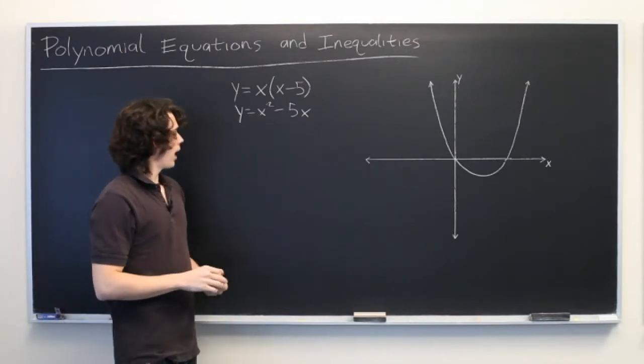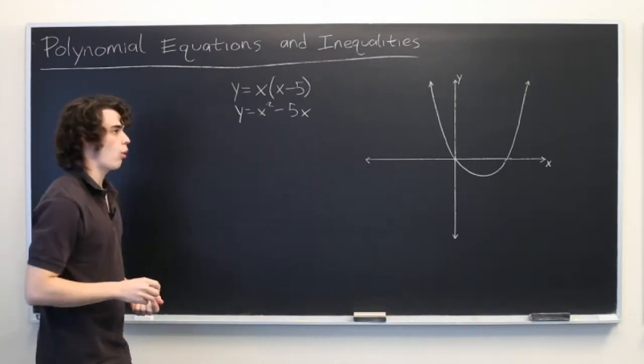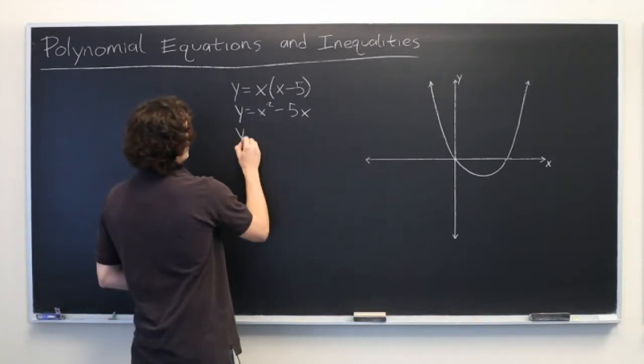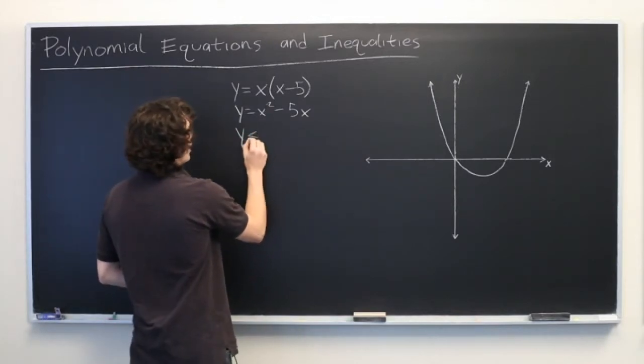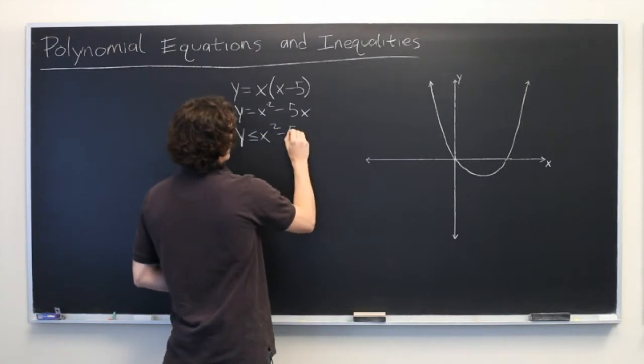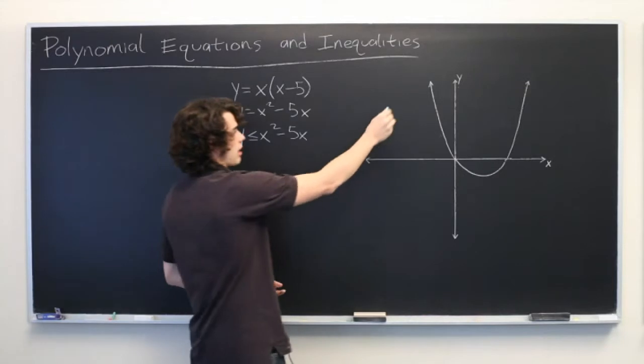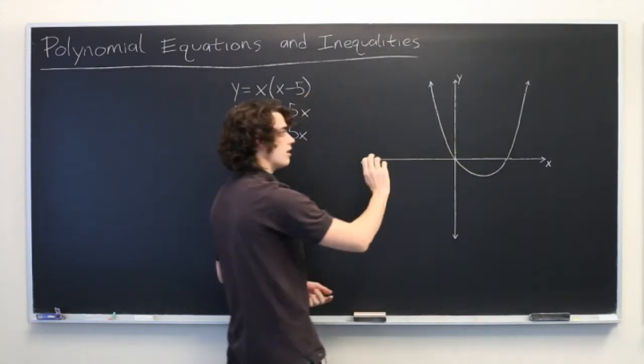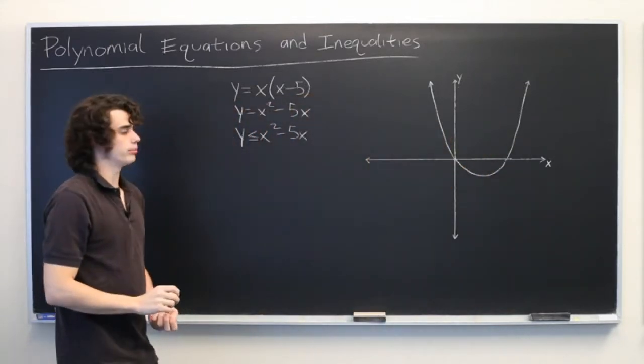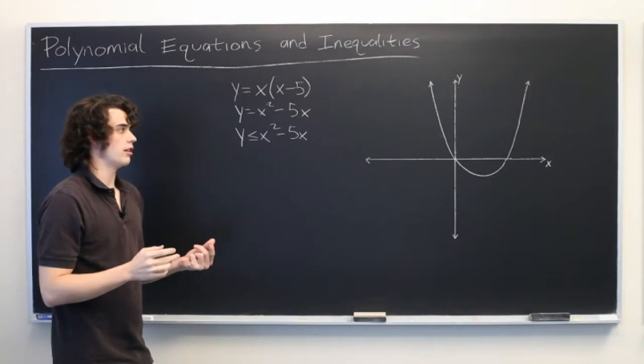So the question is, what happens if we change it to an inequality? Let's say we have y is less than or equal to x squared minus 5x. Well, it's going to give us the same graph except that we need to shade in some of the values on one side of it. But how do we determine which side needs to be shaded in?